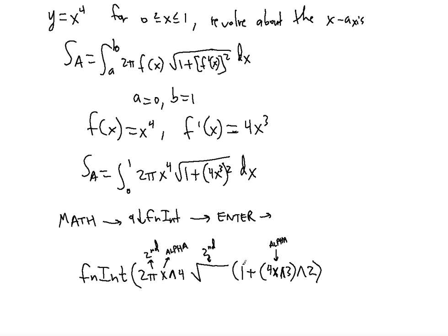Then enter a comma, because you're done with the function. Next, enter x as the variable of integration — use ALPHA for the x — then another comma. Enter the lower limit 0, comma, and the upper limit 1. Close the parentheses and hit Enter, and it will give you precisely the integral you want.